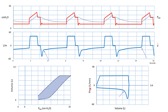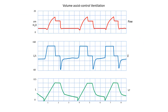On the flow-volume loop you can see the sudden decrease in flow to the plateau phase. Similarly, in this patient you can appreciate the sudden decrease in flow in early expiration as a result of the dynamic collapse of the trachea.